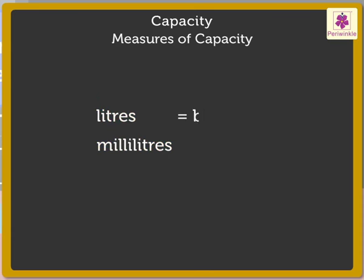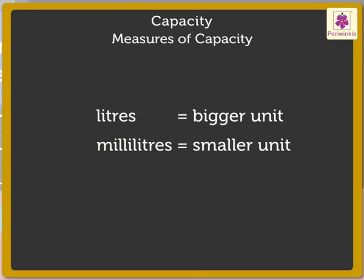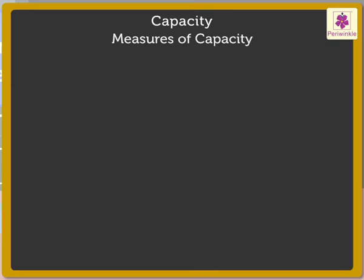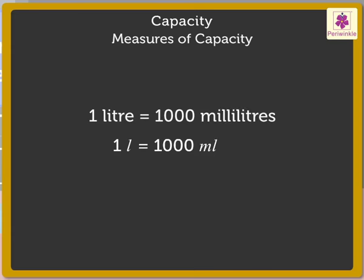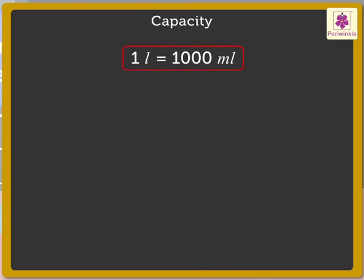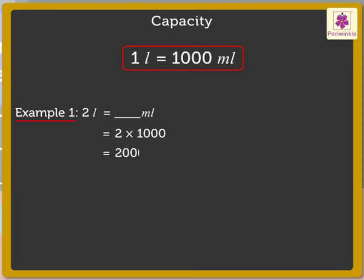Liter is the bigger unit and milliliter is the smaller unit of capacity. We know that one liter is equal to one thousand milliliters. To change liters to milliliters, we multiply liters by one thousand. Let's see how. Let's convert two liters into milliliters: two into one thousand is equal to two thousand milliliters.